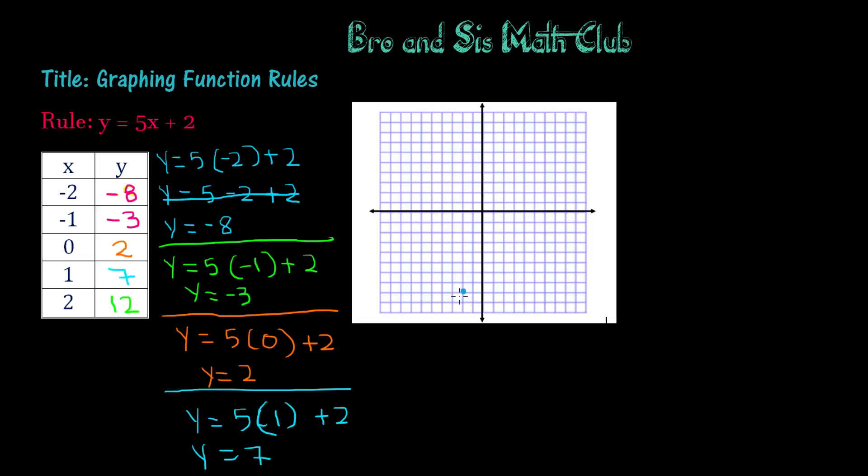Then we have negative 1, negative 3. So negative 1 and negative 3, and we'll plot that right there. Then we have 0, 2, and 1, 7, which is going to be right here.